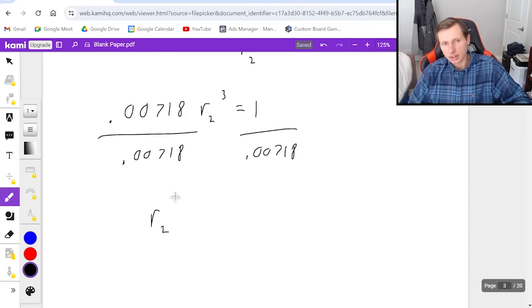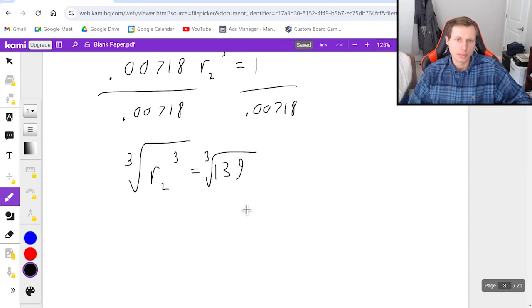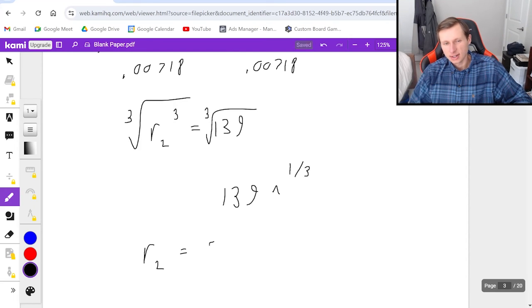So plugging that in a calculator, I'm getting about 139. And then finally, to solve for r2, I need to take the cube root of both sides. In case you don't know where the cube root button is on your calculator, you can also do 139 to the power of one-third—that's the same thing. And so if we do that, then we'll get an answer of 5.18.